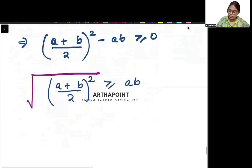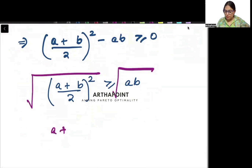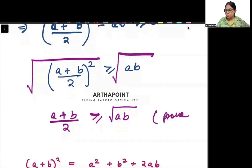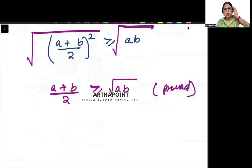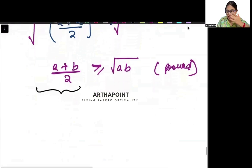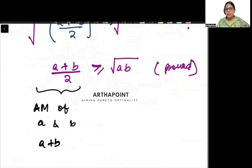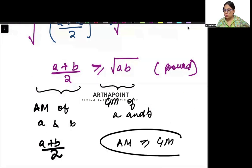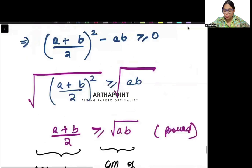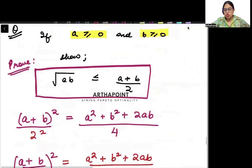I will just take the square root everywhere. So I will get (a plus b by 2) greater than or equal to root ab — and proved. Now, can you tell me what is the implication of this? This is basically the arithmetic mean of a and b: if you find the mean of a and b, you do (a plus b) by 2. And this is the geometric mean of a and b. So indirectly, we have proved that the arithmetic mean is always greater than or equal to the geometric mean. This is the proof using applications of inequality.